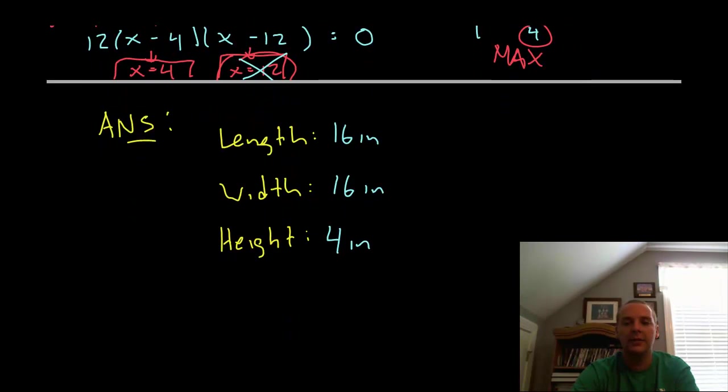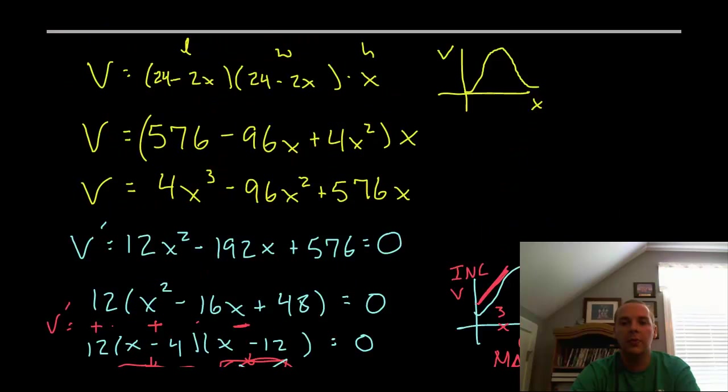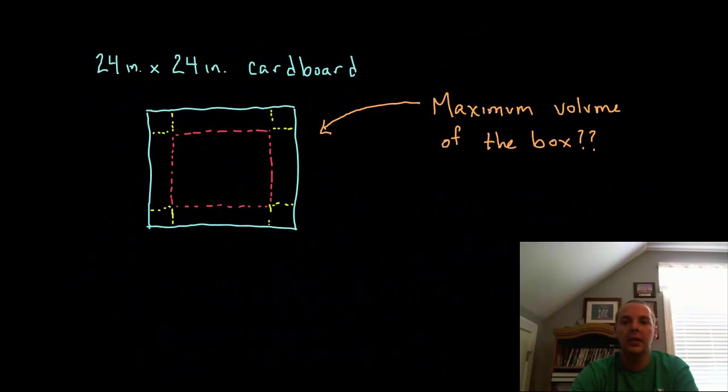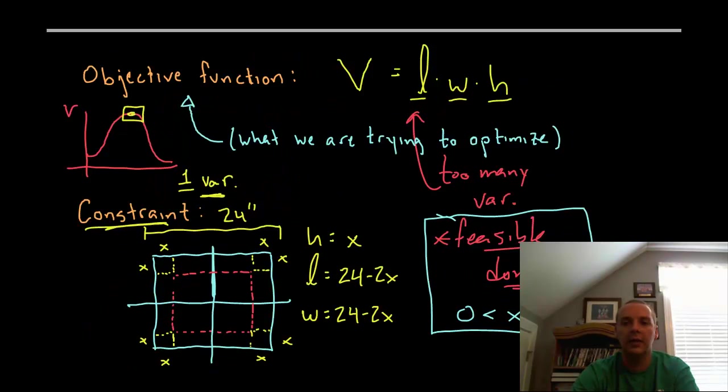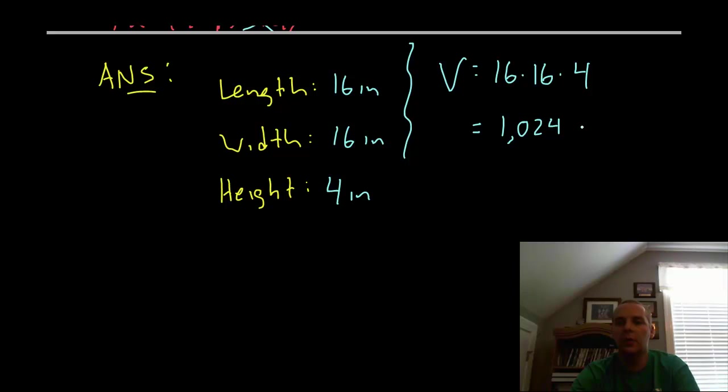Now the last thing I'll say is to make sure to answer the question appropriately. Did they want the dimensions of the box? Did they want to know what the maximum volume was? Make sure to answer the question appropriately. So if I scroll back up and just read real carefully, I'll see the question was what is the maximum volume, not what's x, not what's length, width, height, but what is the maximum volume that can be attained. It's not hard to find. I'm just saying we have to be very careful to give them what they are asking for. So the volume as we know is length times width times height, which would be 1024 cubic inches.